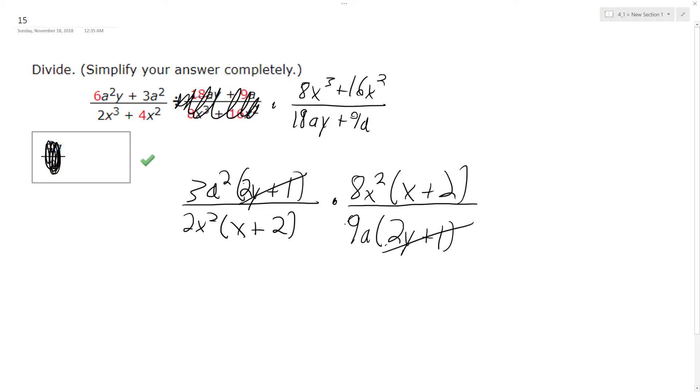Alright, so those cancel out and I'm left with... The x squareds cancel out, and this becomes a 4, this becomes a 1, this becomes a 3, this becomes a 1.